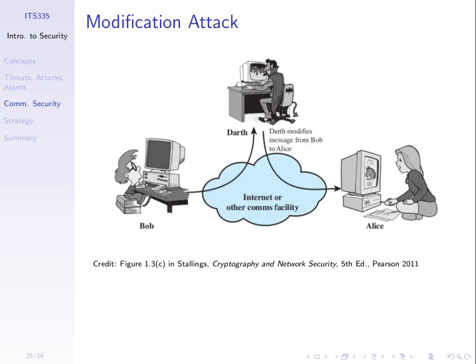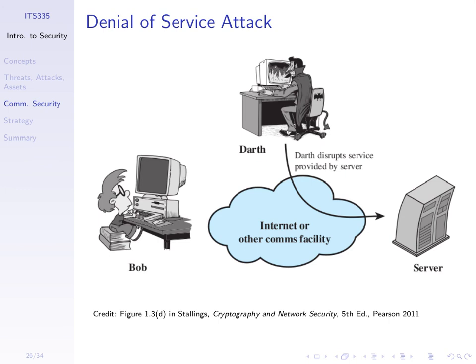A modification attack: Bob sends a message saying decrease Darth's salary by 10,000 baht. Darth intercepts it and changes 'decrease' to 'increase' before forwarding it to Alice. Alice trusts the message and increases the salary. By modifying the message before it reaches the destination, that's a modification attack. We need a way for the receiver to verify that the message came from the right person and hasn't been modified.